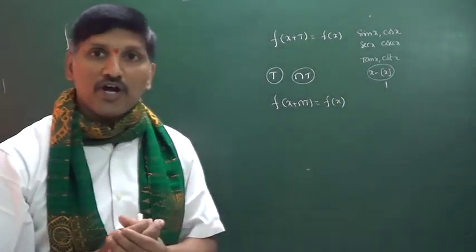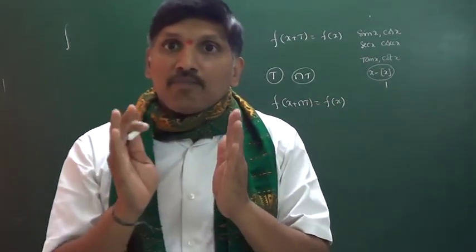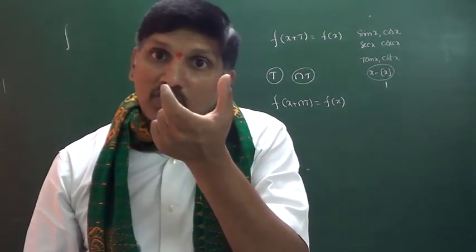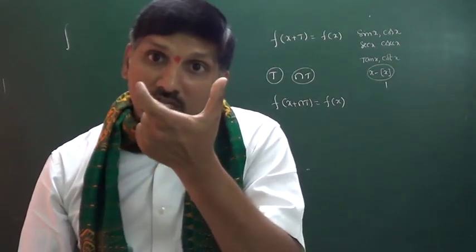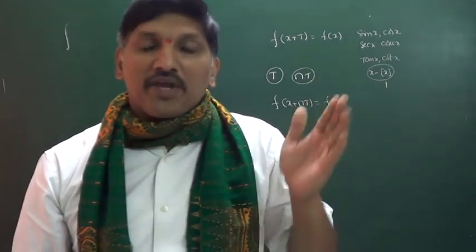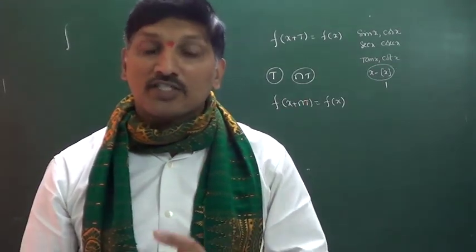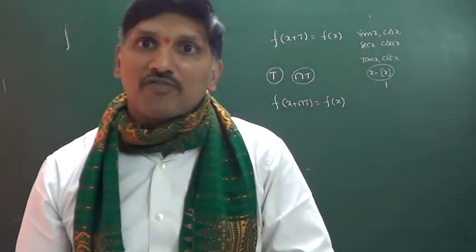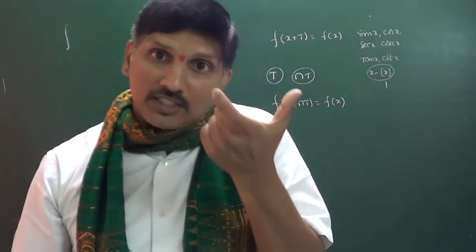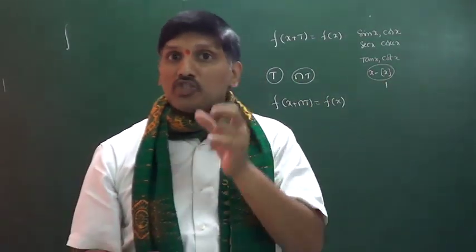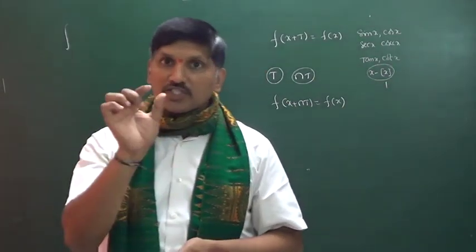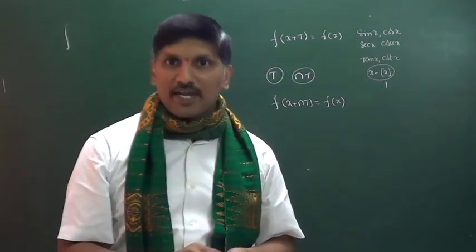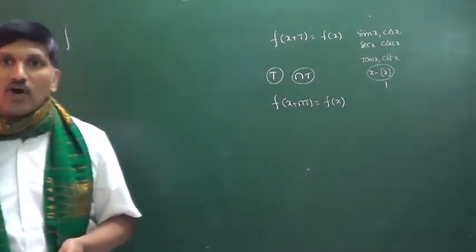That is the discussion of periodic functions. The geometrical meaning of period t is that for every t units of length, the graph repeats. You can check the graph of the fractional part of x — for every one unit length, the same graph repeats. Similarly, for tan x, for every length of π units, the same graph repeats.